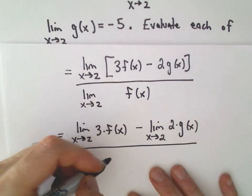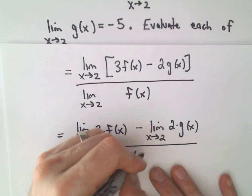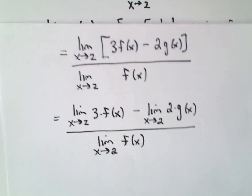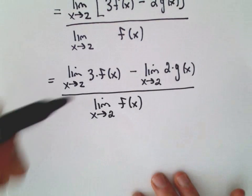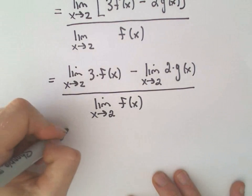In the denominator, I'm going to write it a little closer, we've got the limit as x approaches 2 of our function f of x. Another one of the limit laws simply says if you have constants being multiplied by your function, you can factor those out.